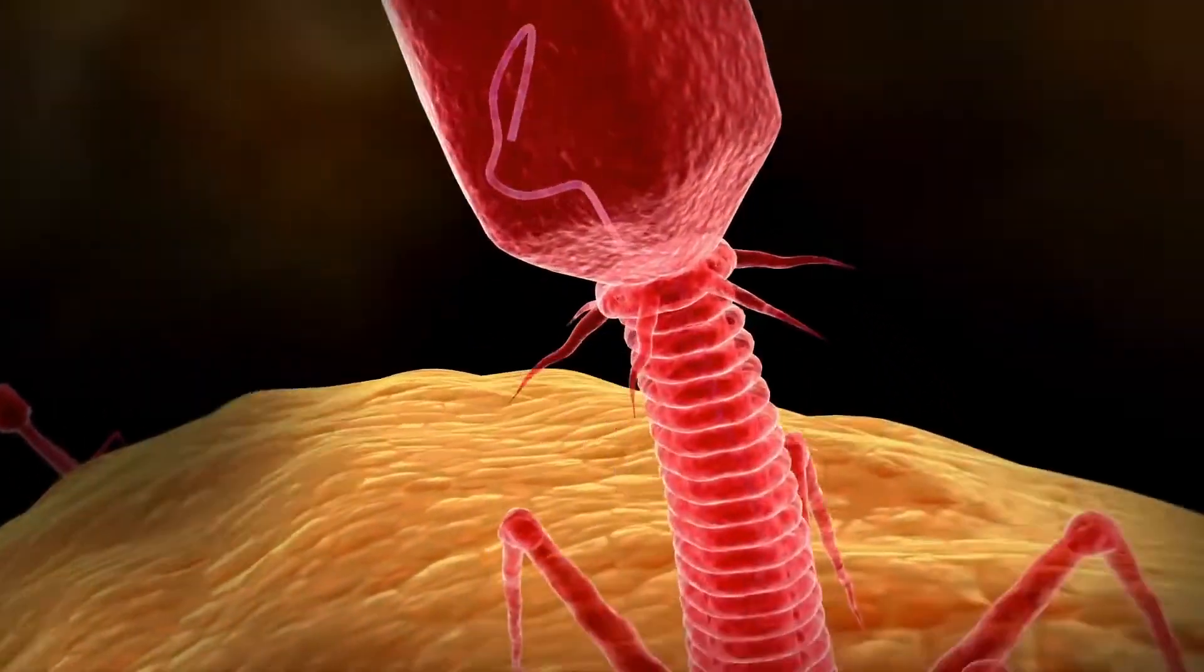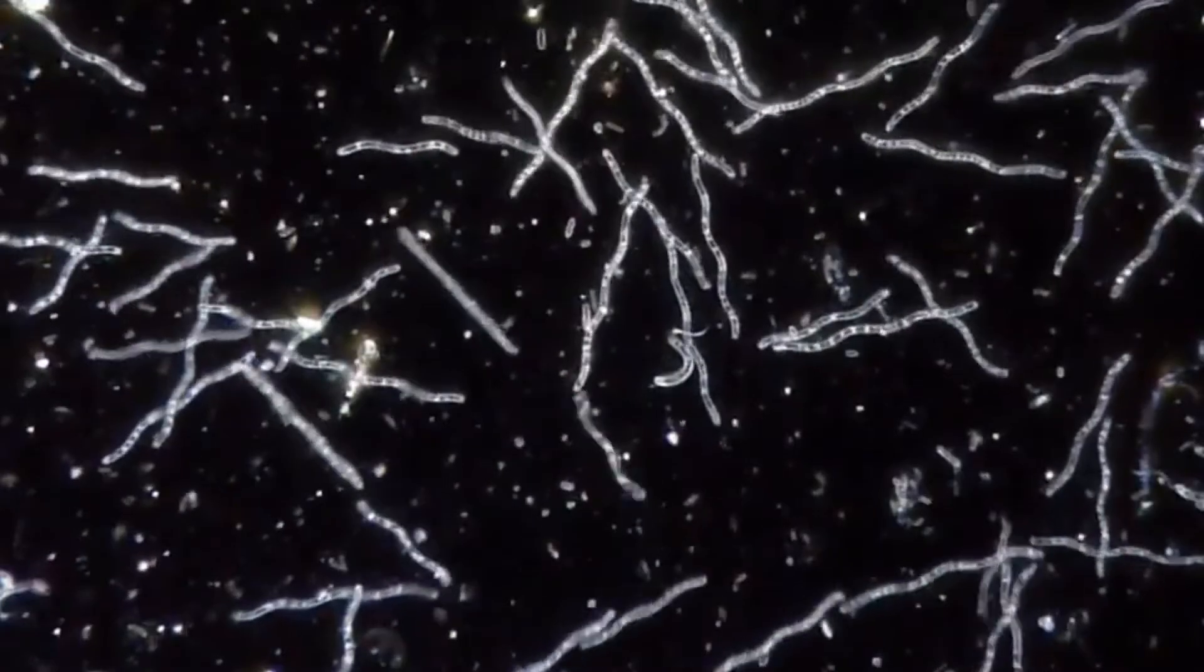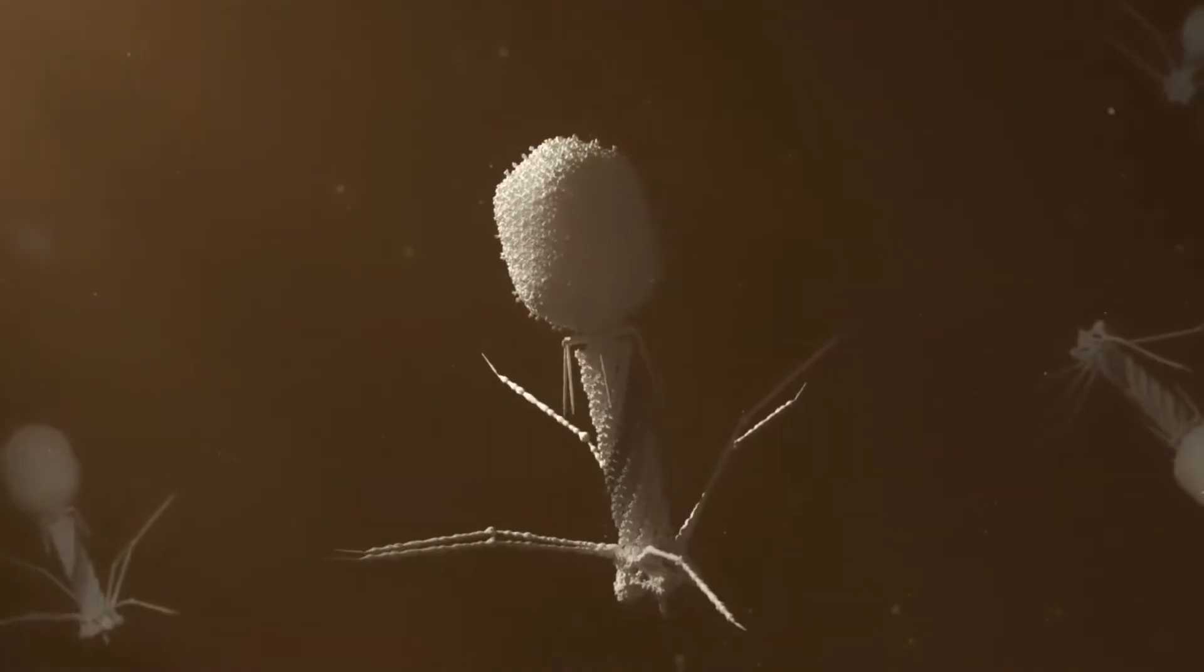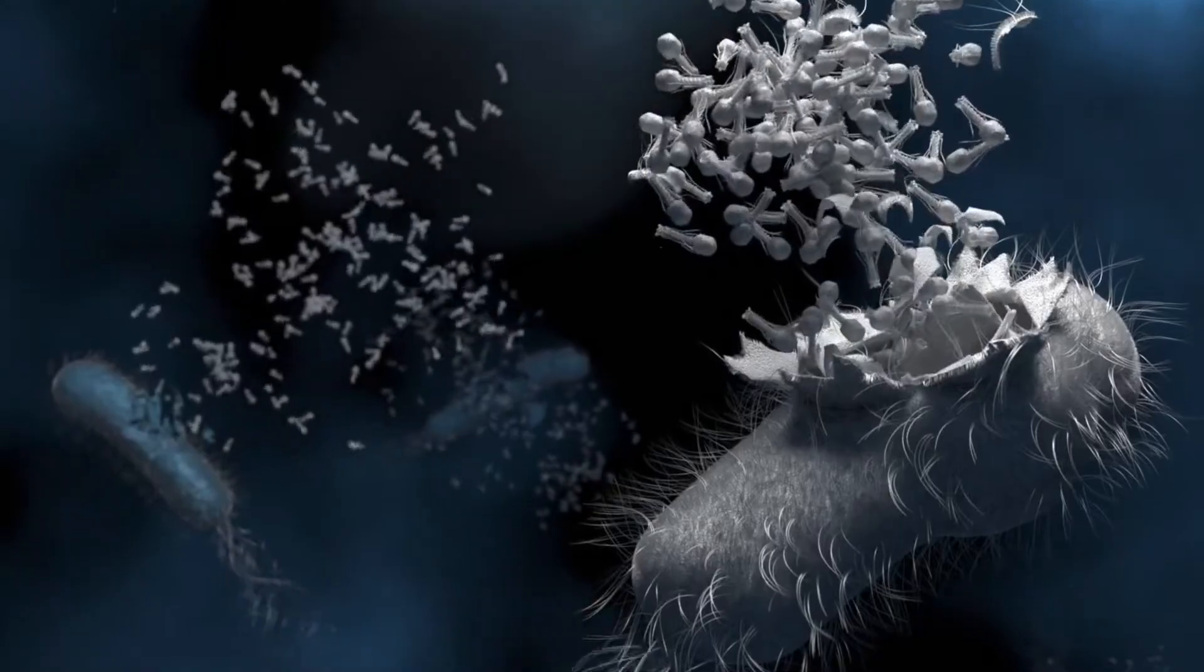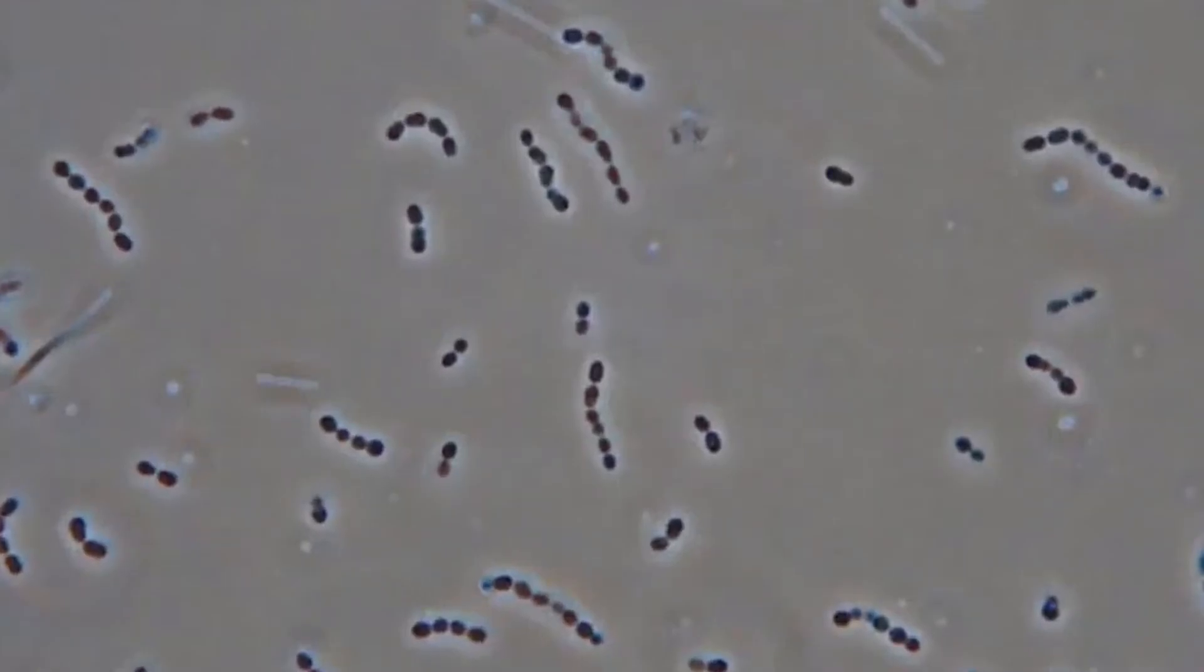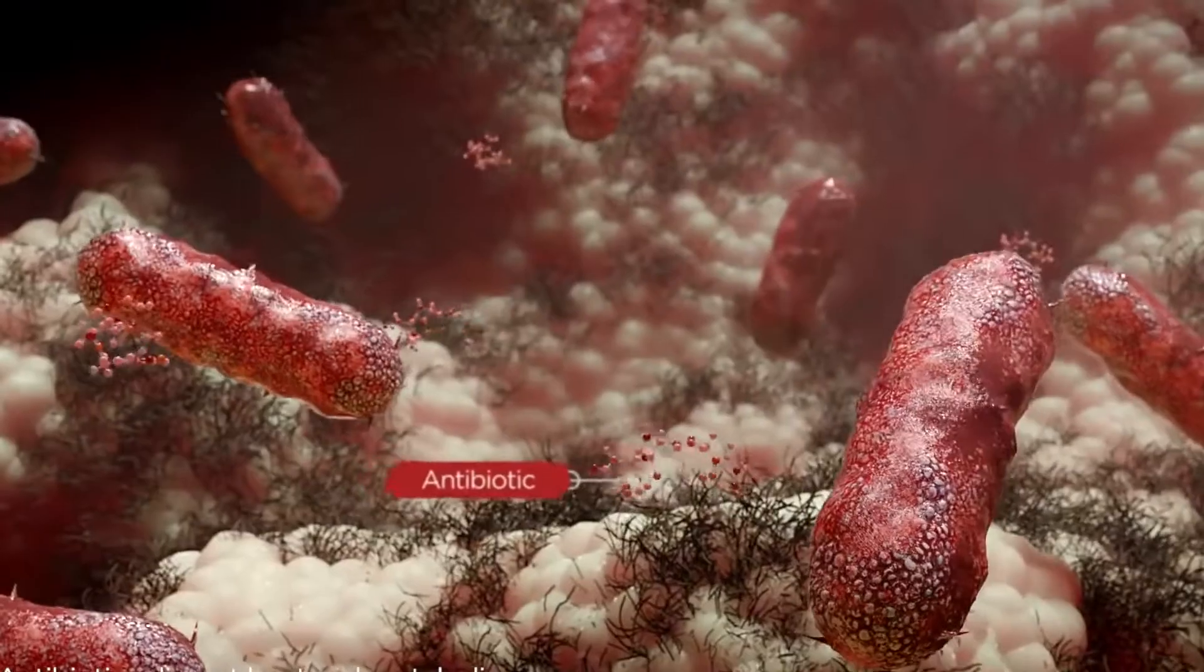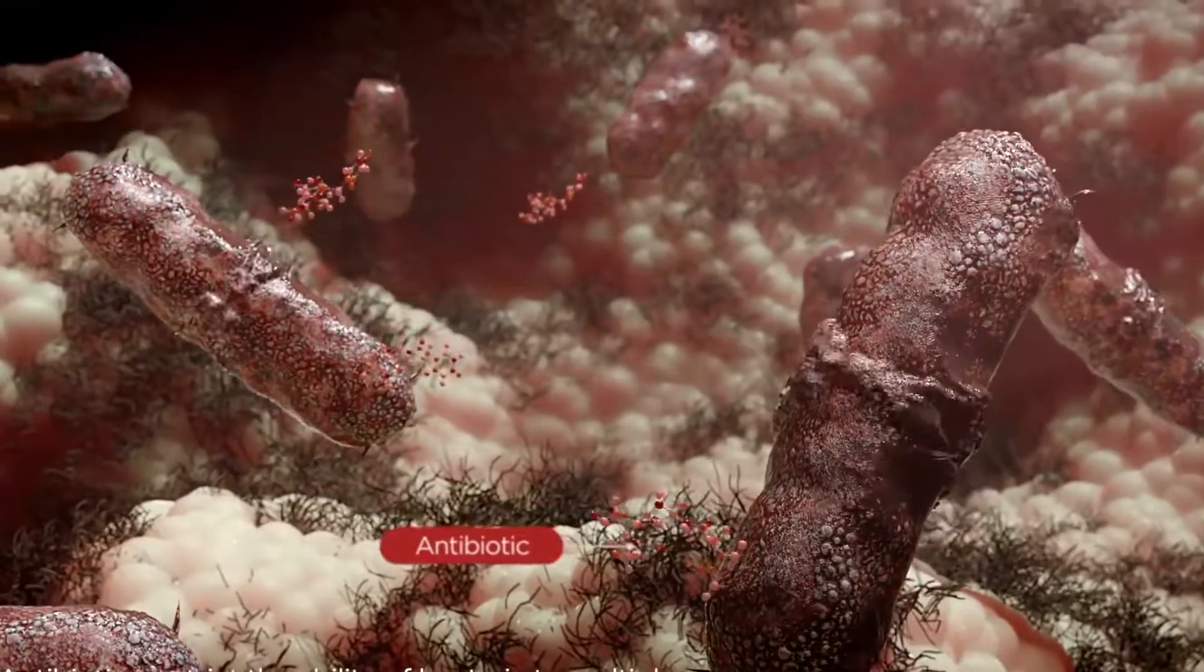Phages are like smart weapons that only get better at doing their job. Even if bacteria somehow became immune against phages, we still win. As it turns out, in order for bacteria to become resistant to even just a few types of phages, they have to give up their resistance to antibiotics. We've got those little demons cornered in a catch-22.